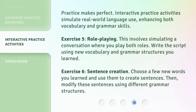Practice makes perfect. Interactive practice activities simulate real-world language use, enhancing both vocabulary and grammar skills. Exercise 5: Role-playing. This involves simulating a conversation where you play both roles. Write the script using new vocabulary and grammar structures you learned. Exercise 6: Sentence Creation. Choose a few new words you learned and use them to create sentences, then modify these sentences using different grammar structures.